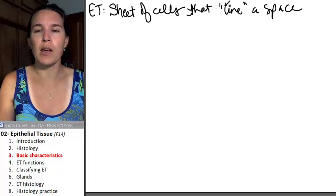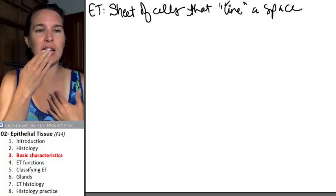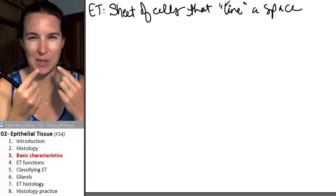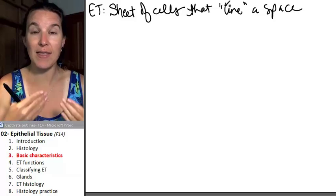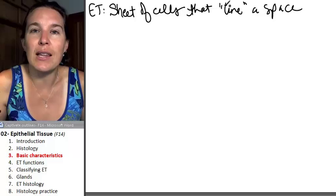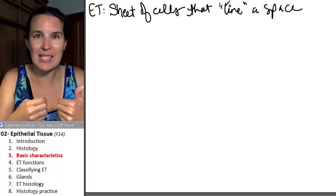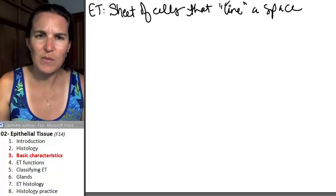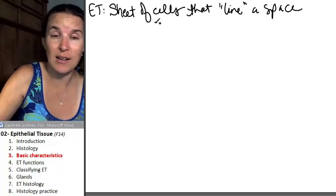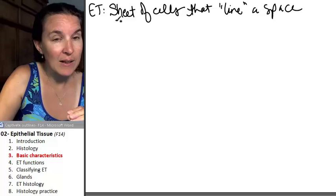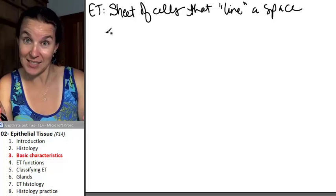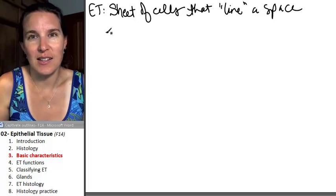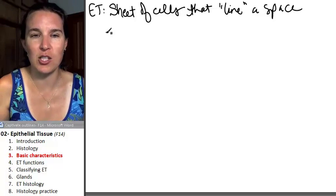Your entire digestive system is a giant tube with a space in the middle of it. And that space, guess what, lines the inside of the tube. It's epithelial tissue. So no matter what, if you see a space and there is a tissue next to it, chances are excellent that that is an epithelial tissue.